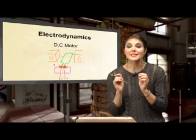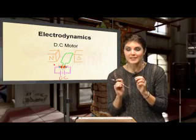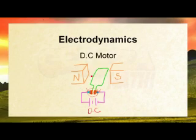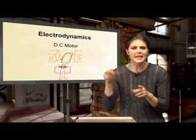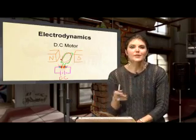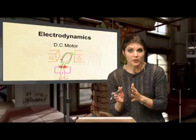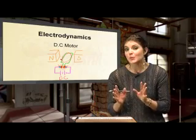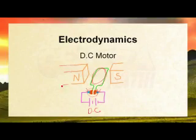Our split ring commutators are fixed to the coil found between the two magnets. This coil, or armature, in our case is just one loop, but in real-life motors there are many loops, which ensures even rotation. This coil is found between two magnets where the north side of one magnet faces the south side of the other, and between those two we find a magnetic field.